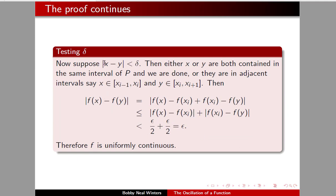Now suppose |x - y| < δ. Then either x and y are both contained in the same subinterval of P, in which case we're done, or they are in adjacent subintervals. Say x is in the i-th subinterval and y is in the (i+1)-th subinterval. Then |f(x) - f(x_i)| must be less than ε/2 and |f(x_i) - f(y)| must be less than ε/2, and therefore it follows that f is uniformly continuous.